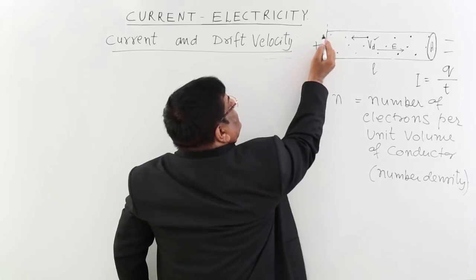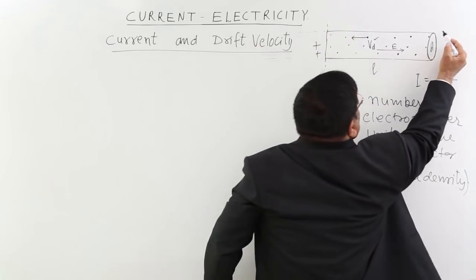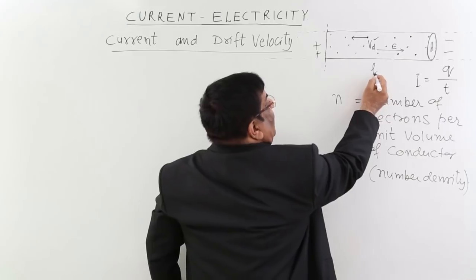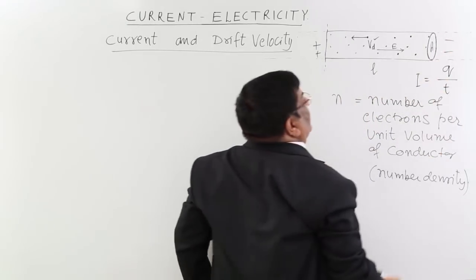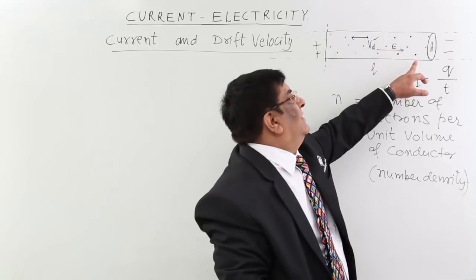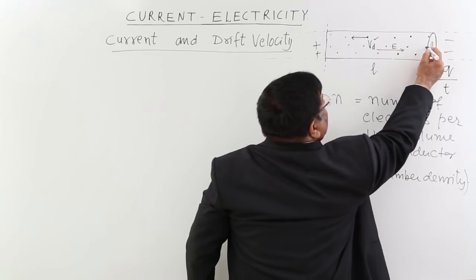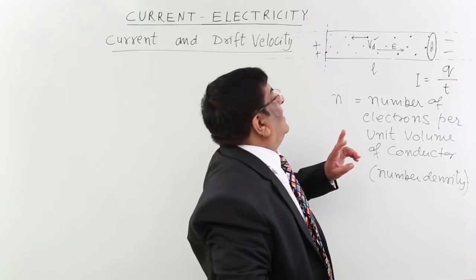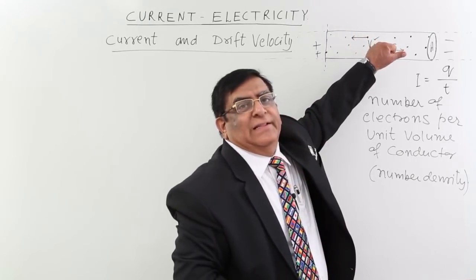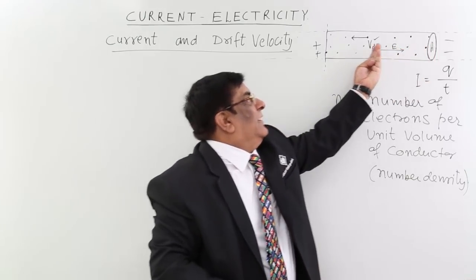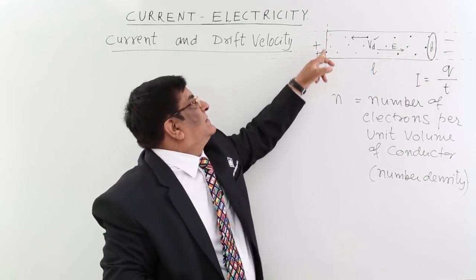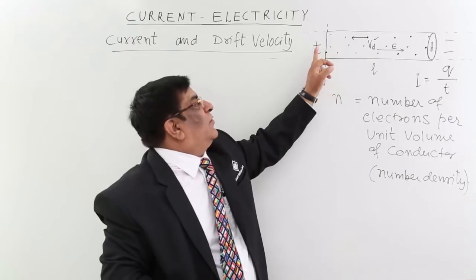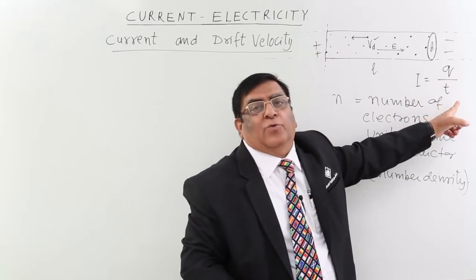This is a conductor. We have taken only this section which has length equal to L and cross-sectional area equal to A. This is the conductor we are considering at present. The last electron in this conductor is at one end, and the first one is at the other. We want to find out how much charge passes across this cross section and in how much time.